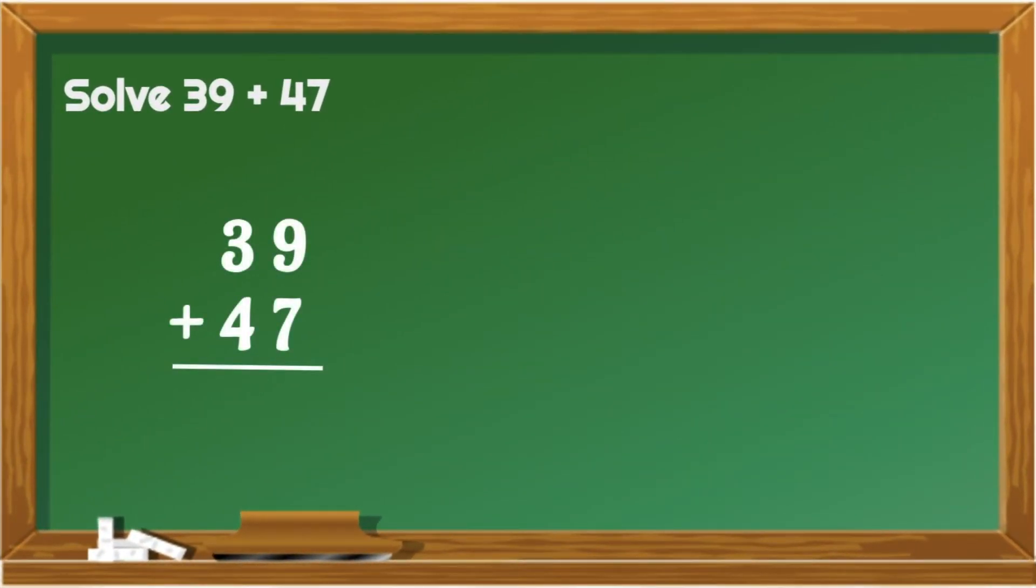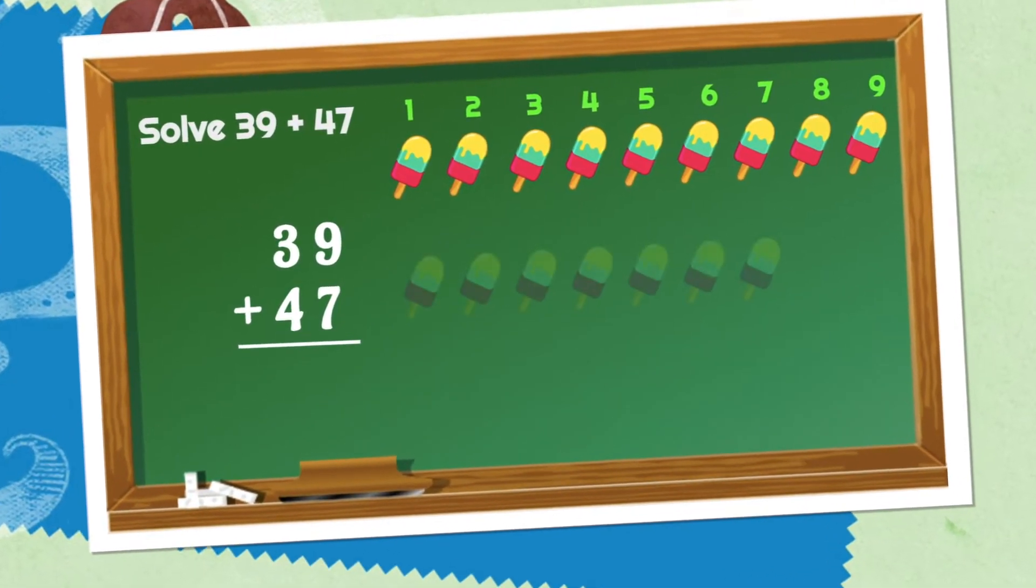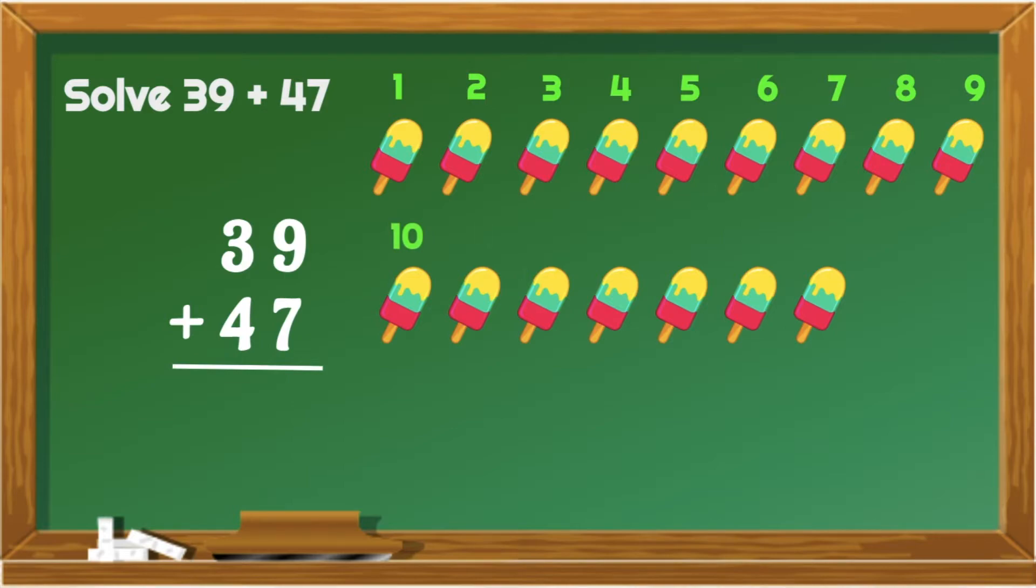Let's have another example. This time, it's 39 plus 47. Let's list down the addends into columns. Start adding the ones place, which is 9 and 7. So, from 9, let's count on. 10, 11, 12, 13, 14, 15, 16. Great! Now, let's put 6 below 7 and carry 1 above 3.